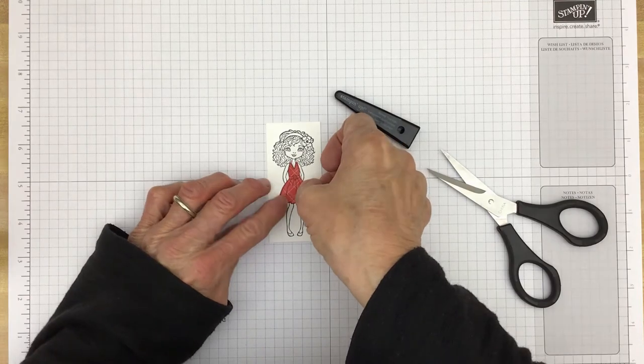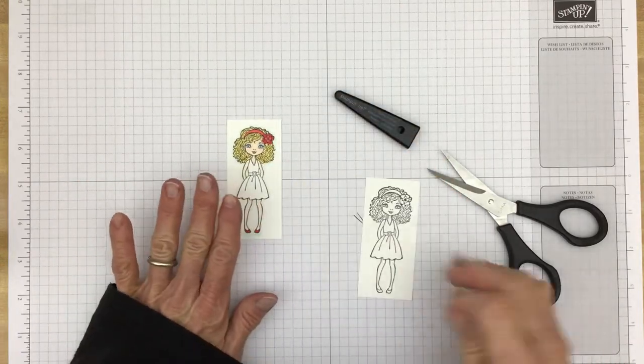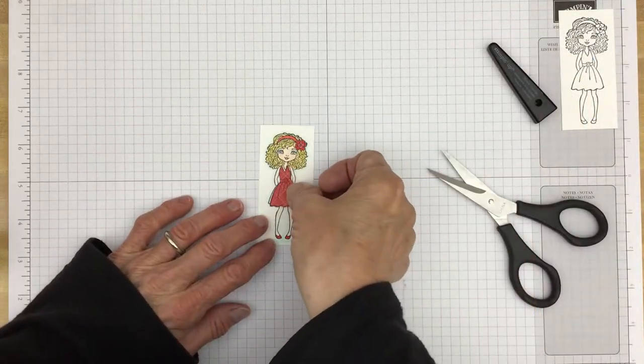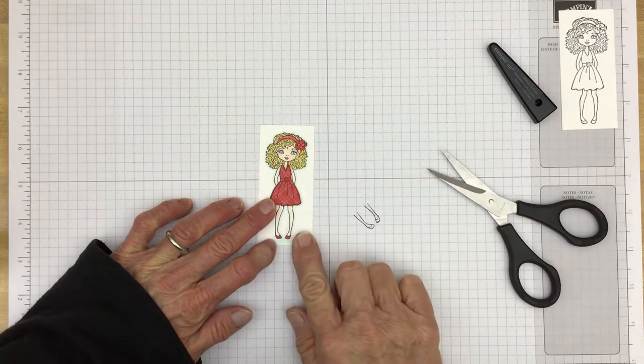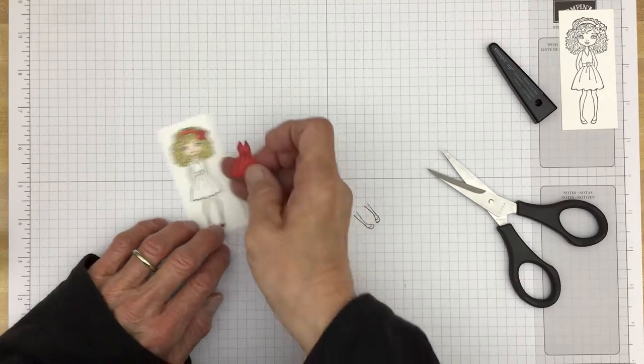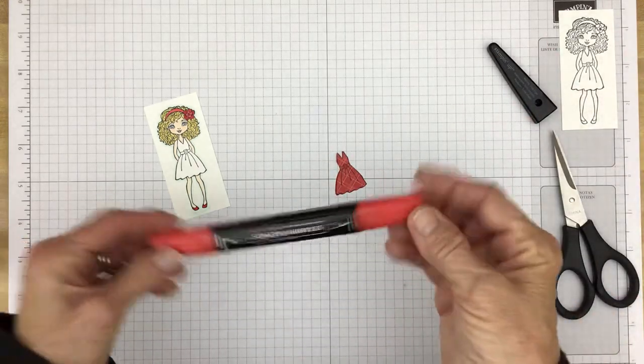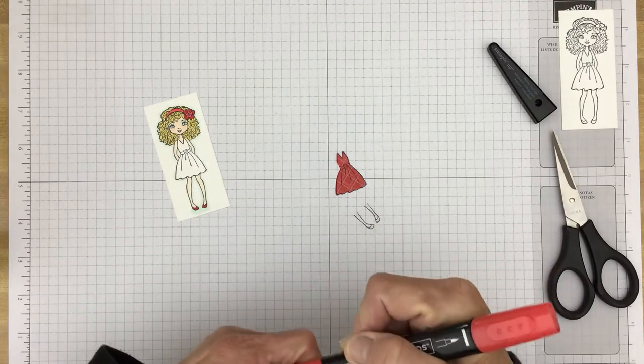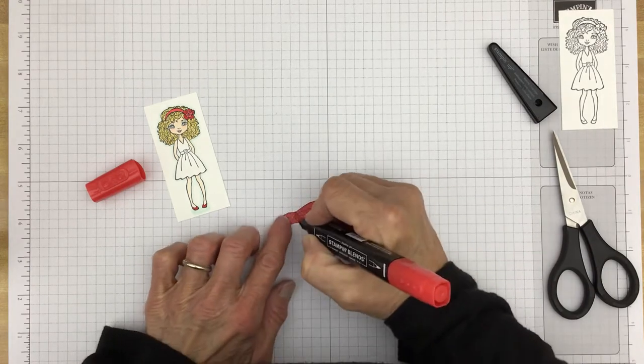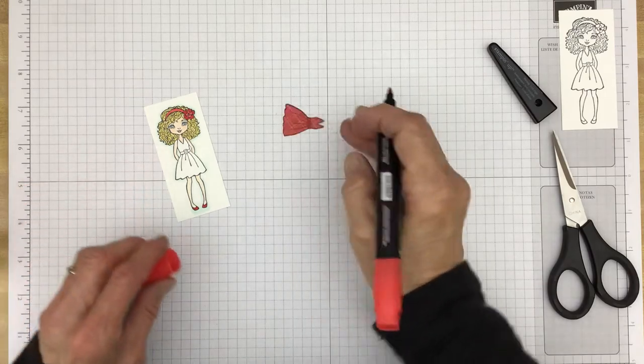Of course we will color her in with Stampin' Blends. I have one already colored, I wasn't going to make you sit there and watch me color her in. I've made her a blonde, this will be my sister Kelly. We are going to adhere this with some multi-purpose glue. That way it'll give us a little bit of wiggle room so we can get it exactly right. Before we do that, I took my poppy parade Stampin' Blend and just kind of went over the belt to differentiate it a little bit from the paper.